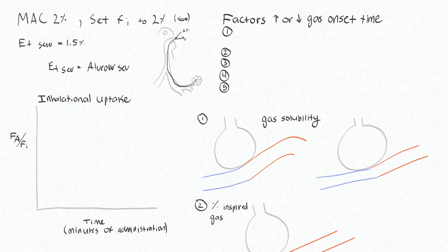You would sample this alveolar gas as your end-tidal gas. So basically, we're saying that our alveolar sevoflurane concentration is only 1.5% when we know that we need it at 2% to keep this person asleep.